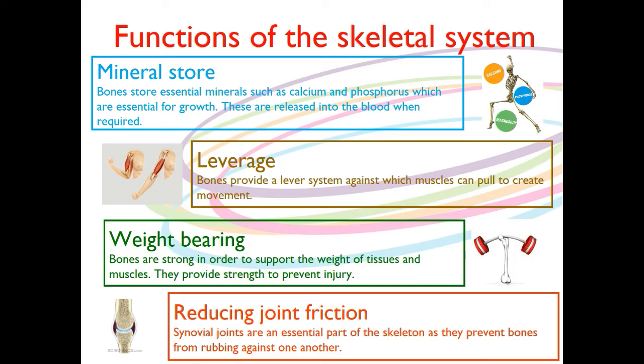The final one is about reducing joint friction. We have synovial joints, and they're a really essential part of the skeleton as they prevent the bones from rubbing against one another. So we've got seven core functions, and then that eighth one is a key point about how the joints work to reduce friction. So let's go through those one more time: support, protection, muscle attachment, blood cell production, mineral storage, leverage, weight bearing, and reducing joint friction. Those are the functions of the skeletal system.